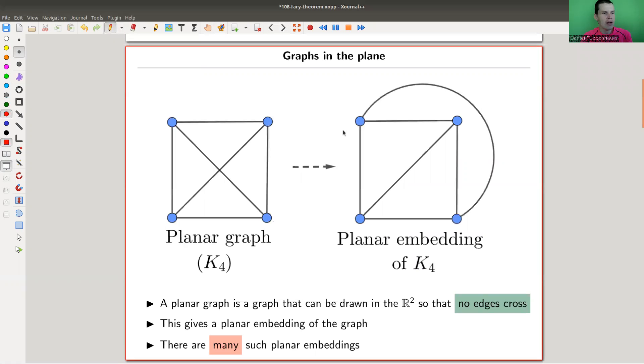So a planar graph and a planar embedding is very different. A planar graph, a graph is an abstract object. It doesn't live anywhere, just a collection of edges and vertices, and the only thing that matters is the connectivity. But you can ask the question whether you can actually nicely draw it in the plane, like let's say R², which is exactly why it's called planar, or plane here, and the planar embedding.